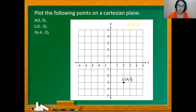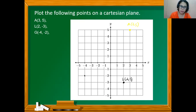Point G is at (-4, -2). From the origin, we count 4 units to the left since the x-coordinate or abscissa is negative 4: 1, 2, 3, 4. Then we move down by 2 units since the second element is negative 2: 1, 2. So this is now point G at (-4, -2).